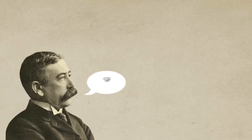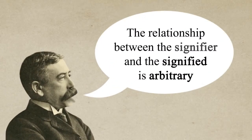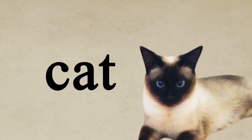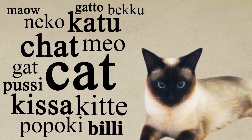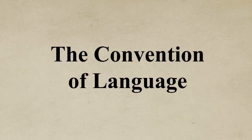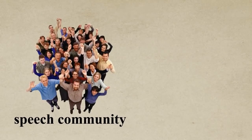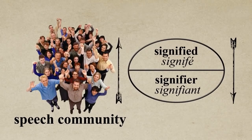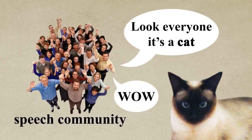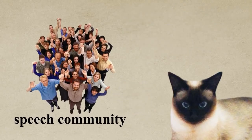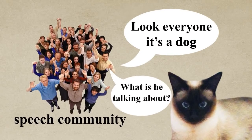Secondly, Saussure highlights that there is an arbitrary and conventional relationship between a signifier and its signified. Arbitrary because there's no natural reason why we call a cat a cat, and that's why different languages have different words for the same thing. The convention of language refers to the idea that a speech community needs to adhere to the same connections between a signifier and its signified. For example, English speakers all share a very similar concept of cat when they hear that word. I can't just start calling a cat a dog and expect anyone to know what I'm talking about.